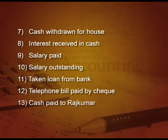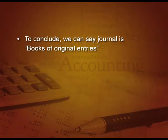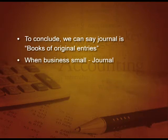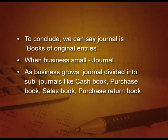Next example: Cash paid to Rajkumar. Rajkumar is the receiver, so: Rajkumar account debit, To cash — because cash is going out. To conclude, journal is the book of original entries. When business is small, we make only a journal. But as the business grows in size, the journal has to be divided into sub-journals like cash book, purchase book, sale book, purchase return book, etcetera.